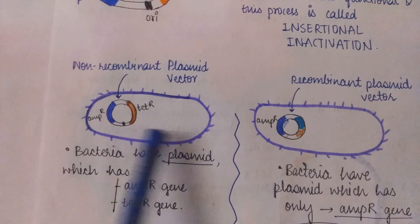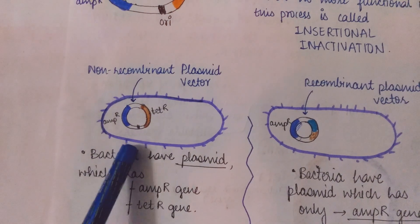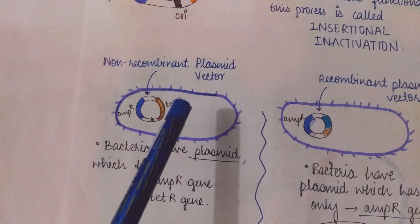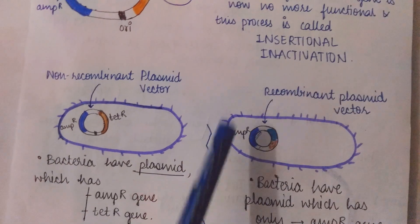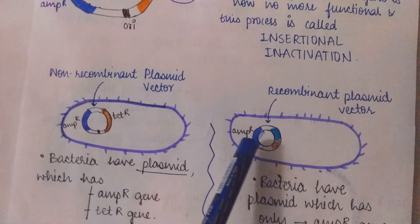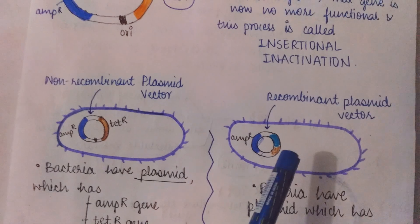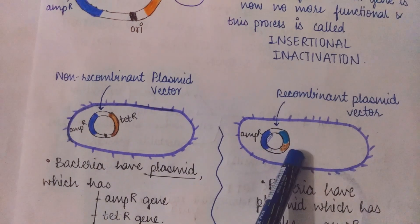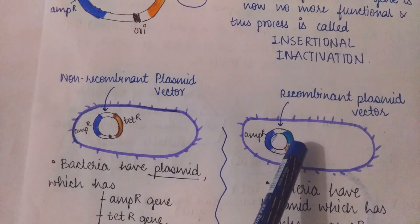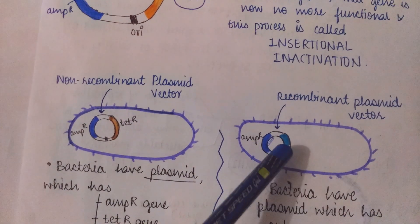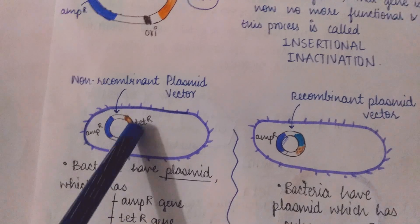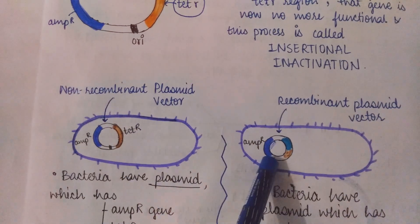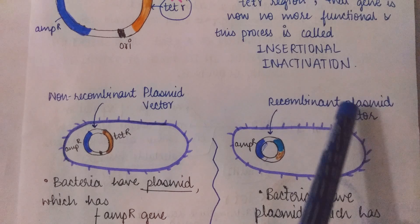Now here these are two bacteria. One bacteria containing a plasmid having ampicillin resistant gene and tetracycline resistant gene. And the second bacteria consists of an ampicillin resistant gene and the gene having the insertional inactivation. It means it consists of that foreign DNA which we have inserted. So this plasmid vector is non-recombinant plasmid vector and this plasmid vector is recombinant plasmid vector.